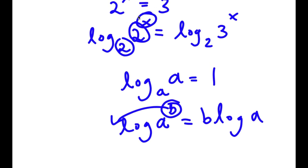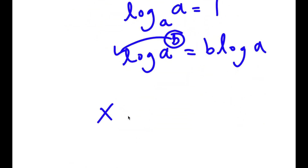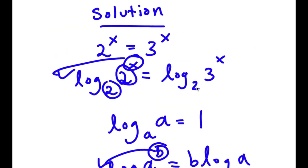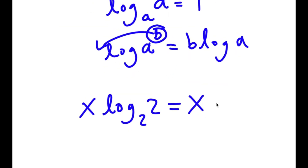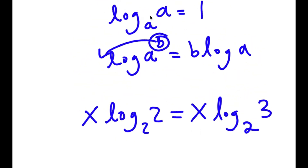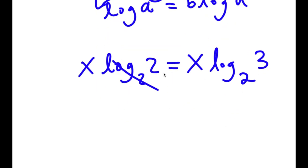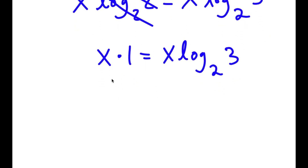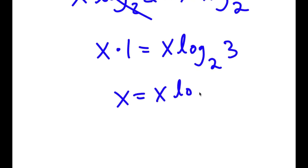In this case, x is my exponent, so I can move it to the front. So now I have x times log base 2 of 2 is equal to x times log base 2 of 3. Now remember, log base 2 of 2 cancels to 1, so I get x times 1 is equal to x times log base 2 of 3, which simplifies to x equals x times log base 2 of 3.